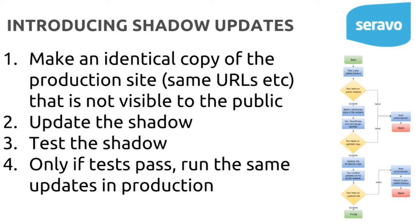Our recommendation, and what we do for our customers, is shadow updates. We make an identical copy of the customer website — we call it the shadow. It has the same URLs and everything but is not visible to the public, only to admins and the customer. We update the shadow, test it for regressions, and only after confirming there are no regressions do we apply those exact same updates to production. This is how we ensure updates go as well as they can.